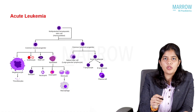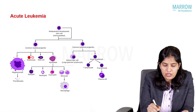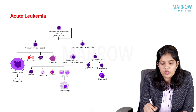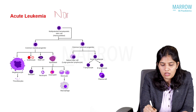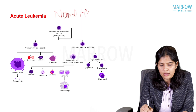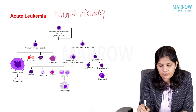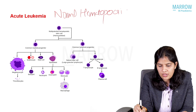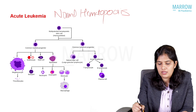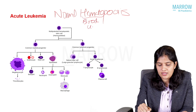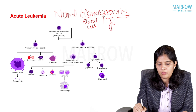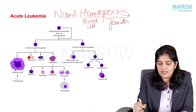In today's class, we will talk about pediatric acute lymphoblastic leukemia. Before coming to the topic, we should know what we mean by normal hematopoiesis. As the name states, 'hemato' means blood, 'poiesis' means formation — so, the formation of blood cells.